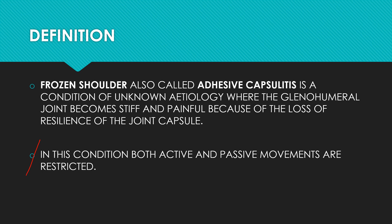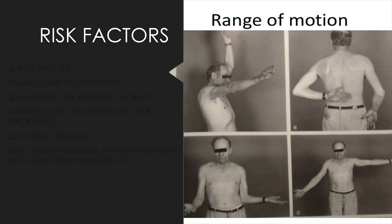The key point for diagnosis is that in frozen shoulder, both active and passive movements are restricted, whereas in normal shoulder pain, both movements are not restricted. Looking at the pictures demonstrated, we can clearly see that in the affected hand, the man is unable to complete the full range of motion, whereas in the unaffected hand, he is able to complete full range of motion.